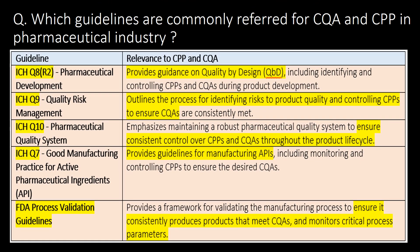A very important question: which guidelines are commonly referred to for CQA and CPP in the pharmaceutical industry? The commonly referred guidelines are: ICH Q8R2 (Pharmaceutical Development), ICH Q9 (Quality Risk Management), ICH Q10 (Pharmaceutical Quality System), ICH Q7 (Good Manufacturing Practice for Active Pharmaceutical Ingredients), and FDA process validation guidelines.